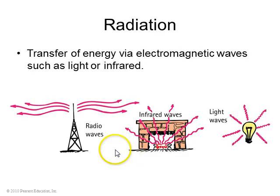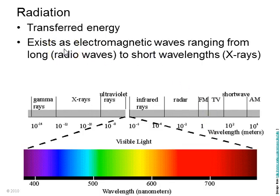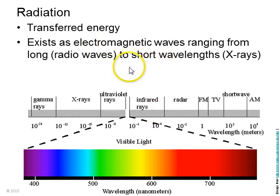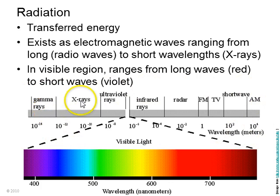Lastly, radiation is the transfer of energy via electromagnetic waves, such as light, radio waves, and infrared waves. Electromagnetic waves are waves in the electric and magnetic fields, and they exist ranging from long-wavelength radio waves all the way down to visible light, and even shorter to gamma rays — but these are all the same thing, just waves in the electric and magnetic fields.